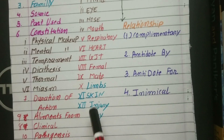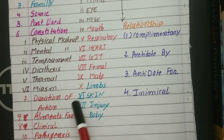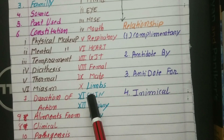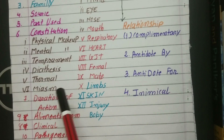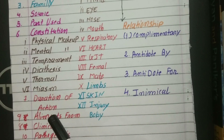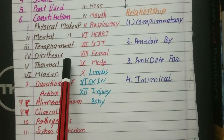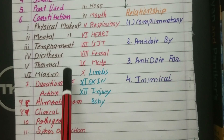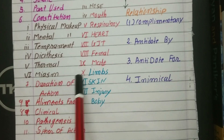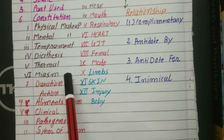If the patient prefers warm things, warm drinks, and warm weather, then that patient is a hot patient. If they like warm things and feel better with warmth, then they are a chilly patient. Then our last sub-heading is miasms. There are three miasms: psora, sycosis, and syphilis. We will write this heading.